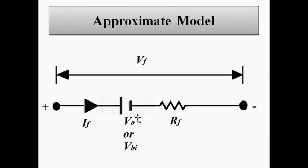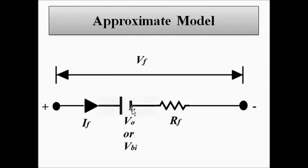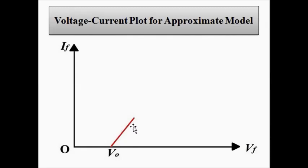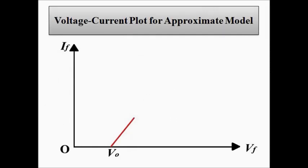The current increase obeys ohmic characteristics — Ohm's law — because of the existence of the forward resistance, and that's why it shows ohmic behavior with a slope. The absence of current up to the cut-in voltage is due to the built-in potential, and the ohmic behavior after that is due to the forward resistance of several ohms. This is the voltage-current plot for the approximate model.